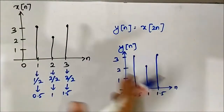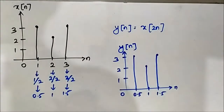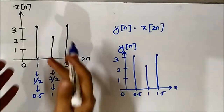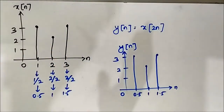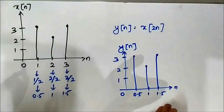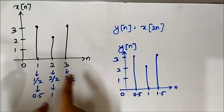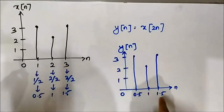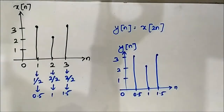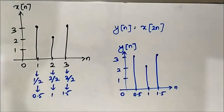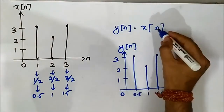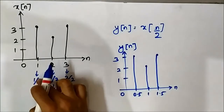Same pattern, same amplitude, but the time instances of the reference signal are divided by 2: 1 becomes 0.5, 2 becomes 1, 3 becomes 1.5 — the same amplitudes appear at half of the original discrete time instances. Now suppose we do the other one, x[n/2]. Here n is being divided within the bracket, so the time instances will get multiplied.